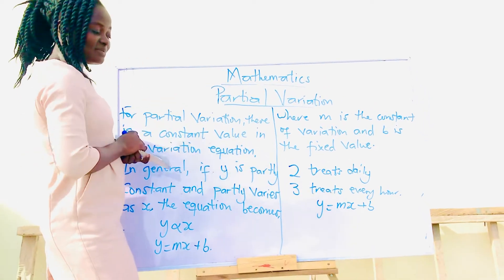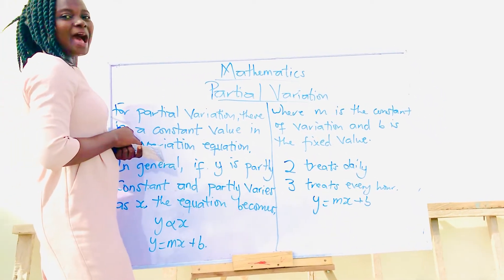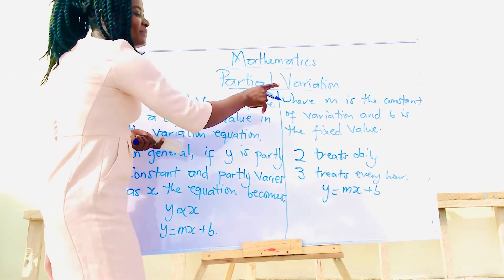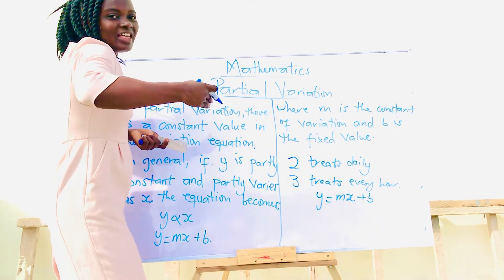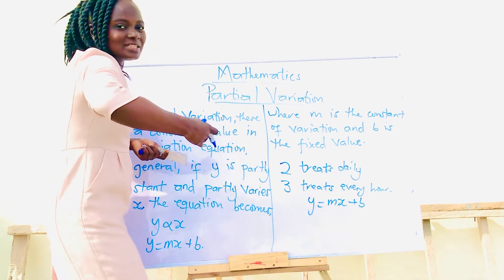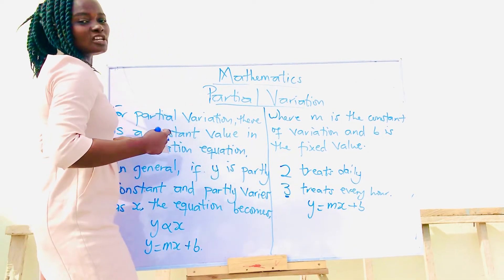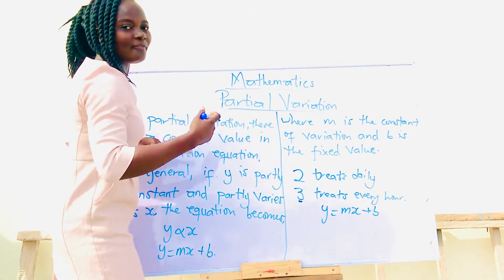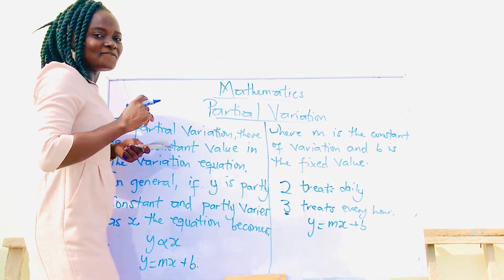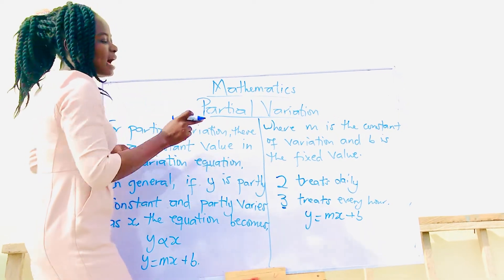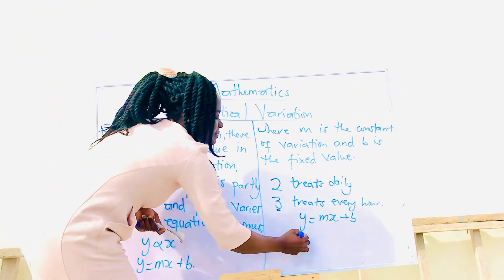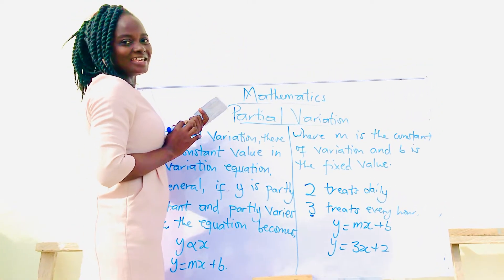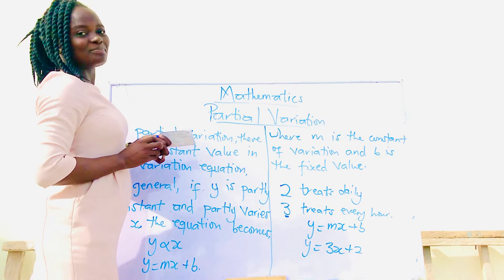From our statement, what do you think would be our m? Don't forget that the m is the constant of variation, the added values, and that is our three, because she gives Pigs three treats per every hour. Then the constant value, or the fixed value, becomes our two. So we do a simple substitution to have y equals 3x plus 2.